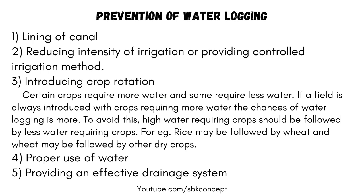Prevention of Waterlogging: Lining of canals. Reducing intensity of irrigation or providing controlled irrigation methods. Introducing crop rotation — certain crops require more water and some require less water. If a field is always introduced with crops requiring more water, the chances of waterlogging are greater.